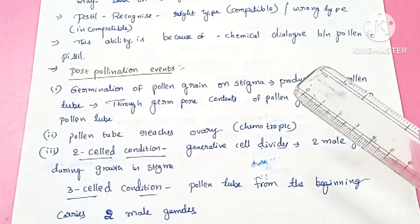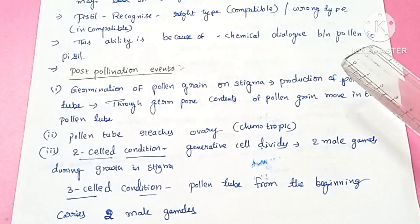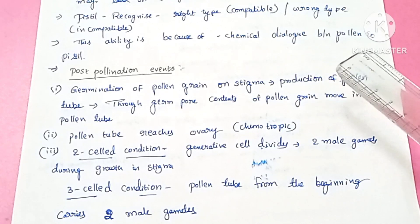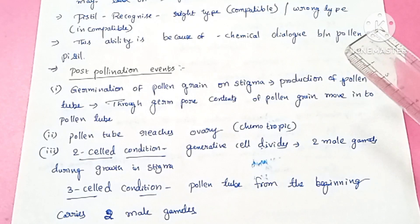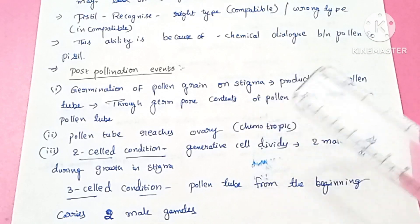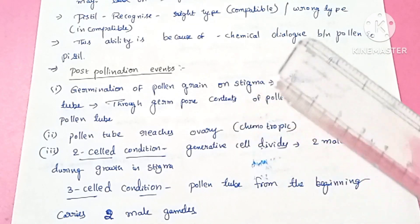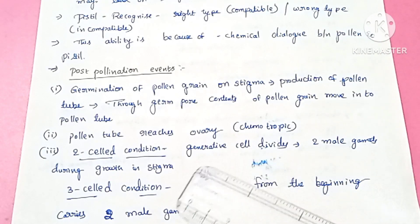There are two conditions: 2-celled condition and 3-celled condition. The structure of the pollen grain consists of vegetative and generative cells. The vegetative cell is large, and the generative cell is small and spindle-shaped.